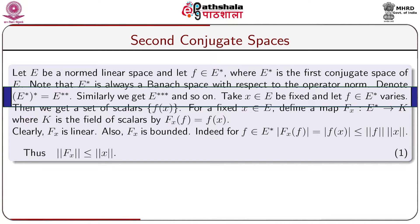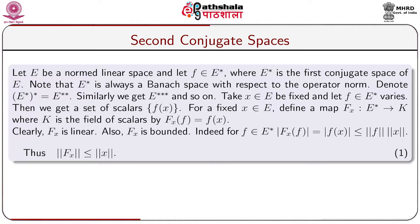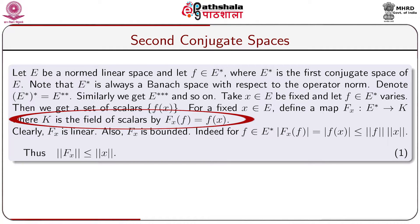Denote E* star equal to E double star. Similarly, we get E triple star and so on. Let us take an element x belonging to E which is fixed, and let f belonging to E* vary. Then we get a set of scalars f(x). For a fixed x belonging to E, define a map F_x from E* to K, where K is the field of scalars, by F_x(f) = f(x).